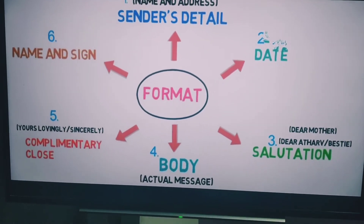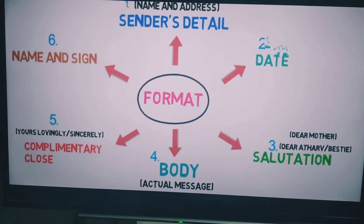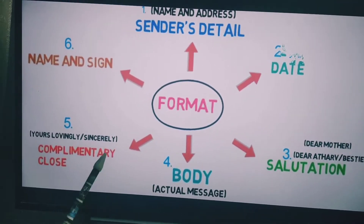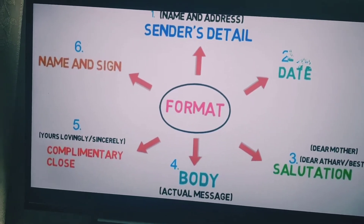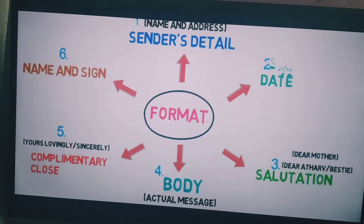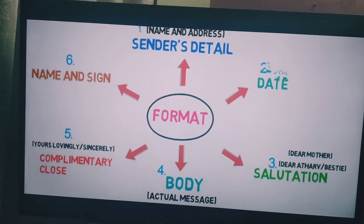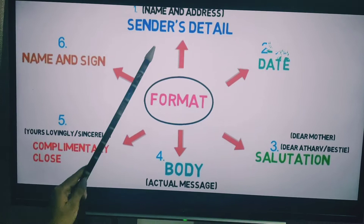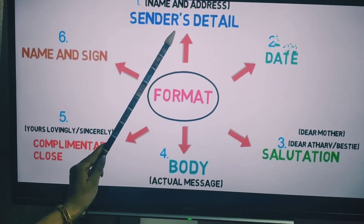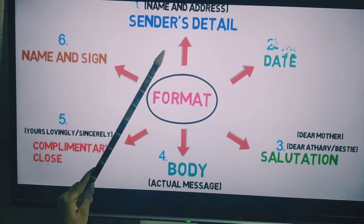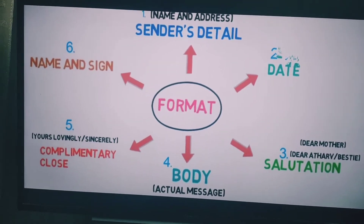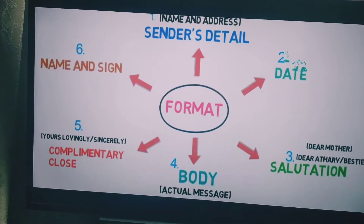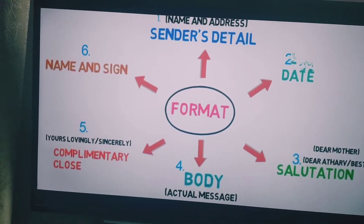An informal letter must include six parts. The very first step is sender's details — here the sender's name and address comes. The sender is the one who is writing the letter.